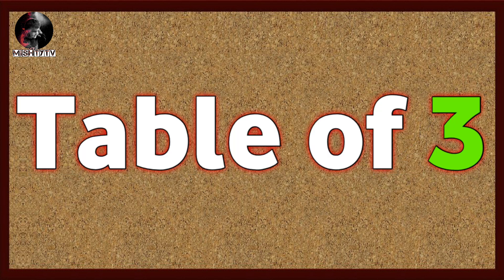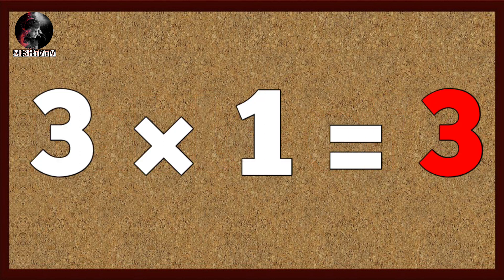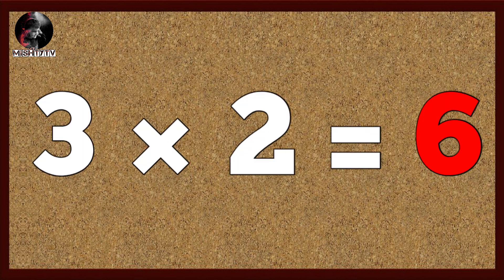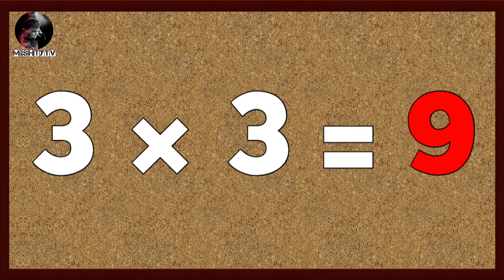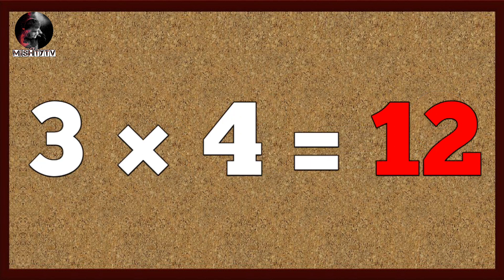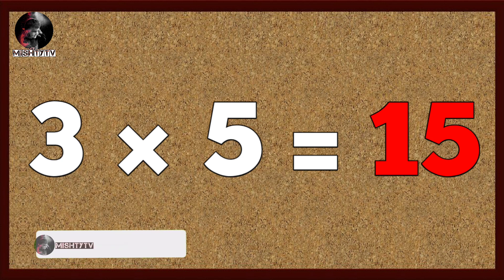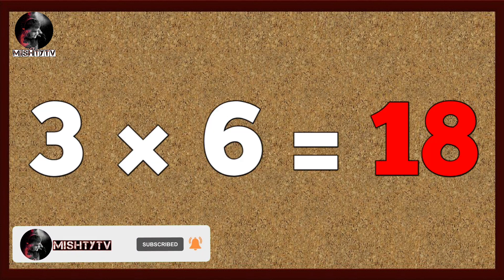Table of three. Three one's are three, three two's are six, three three's are nine, three four's are twelve, three five's are fifteen, three six's are eighteen.